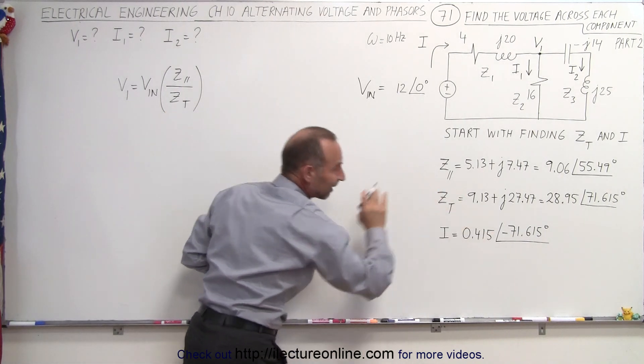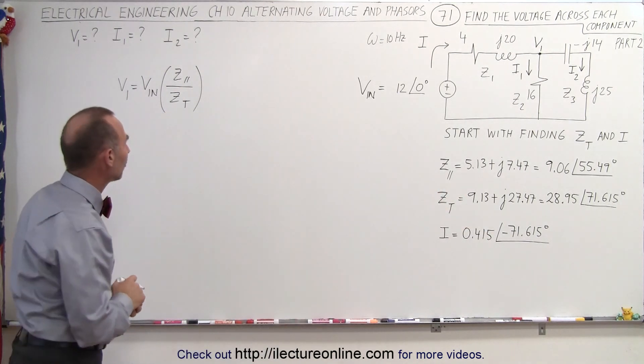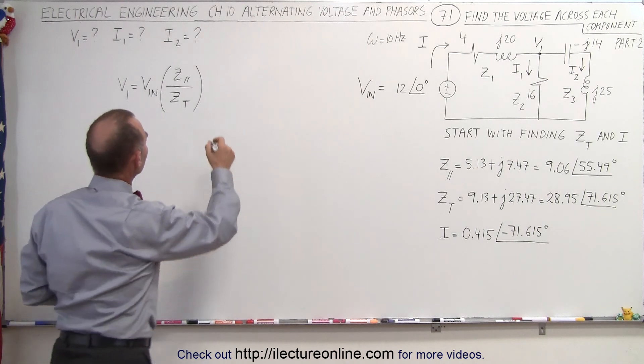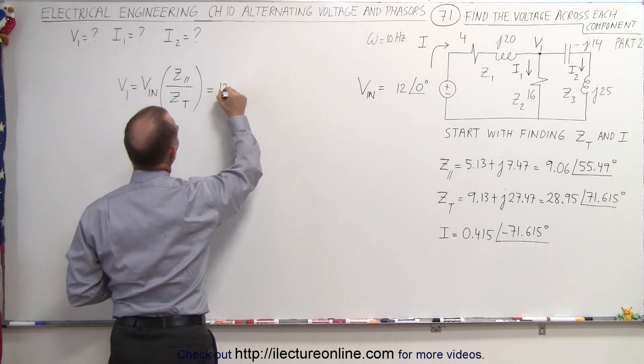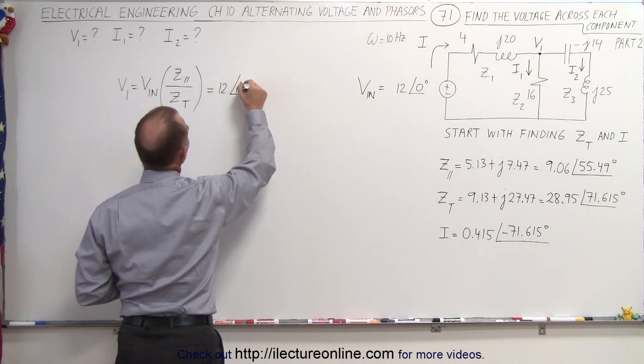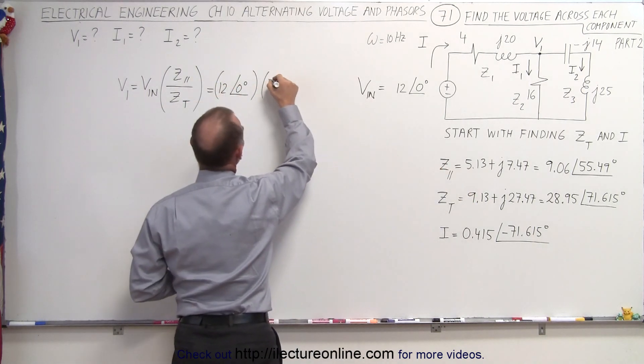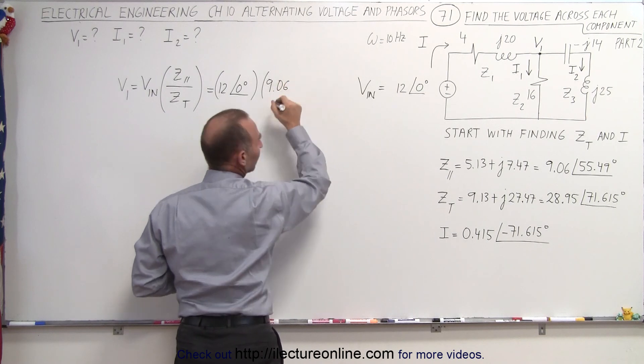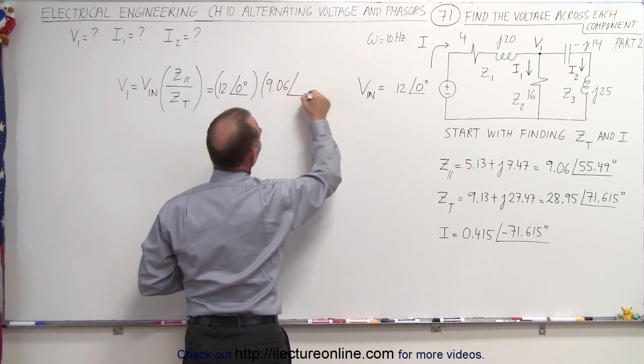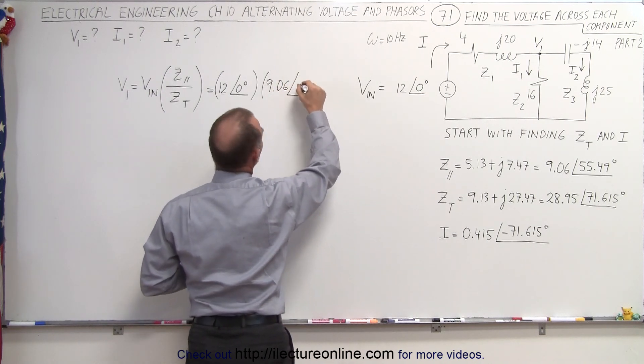And I kept the results of the last video right there handy, so we can use those. So the input voltage is equal to 12 volts with a phase angle of zero degrees. Then we multiply that times the impedance of the parallel branch right here, which is 9.06, and a phase angle of 55.49 degrees.